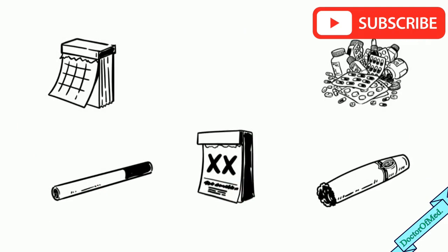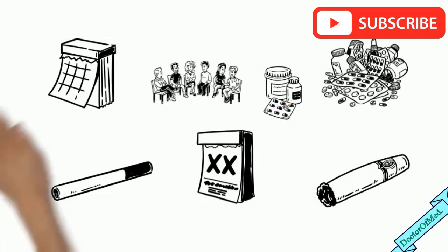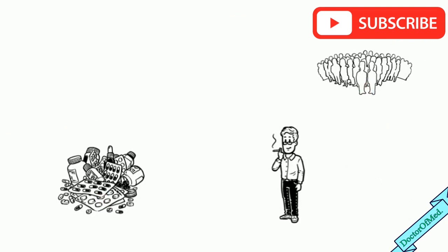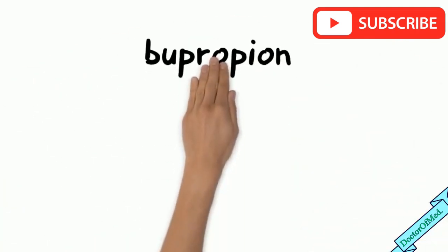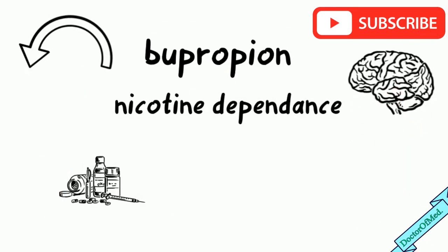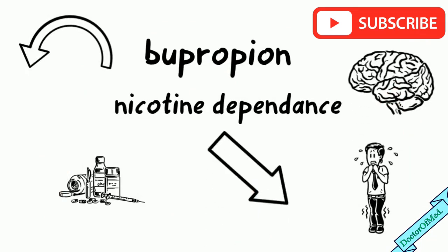Treatment of tobacco addiction consists of behavioral therapies as well as medicinal therapies. These medications can help people quit smoking by reducing the cravings. Bupropion is the most used medicine for nicotine dependence. It alters the dopamine levels in the brain which reduce nicotine cravings and withdrawal symptoms.